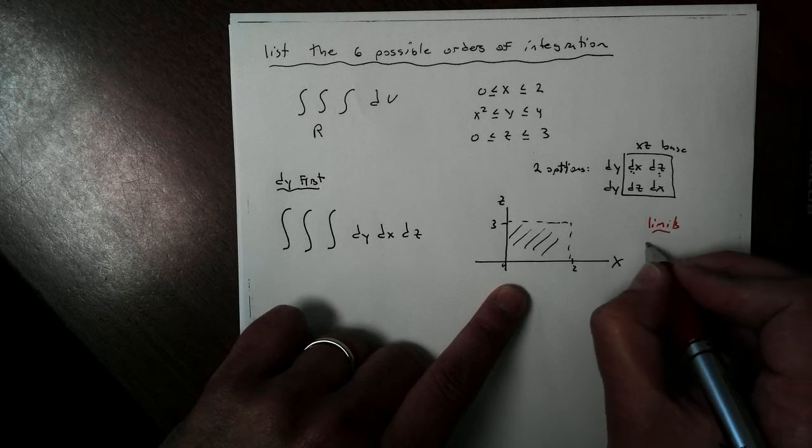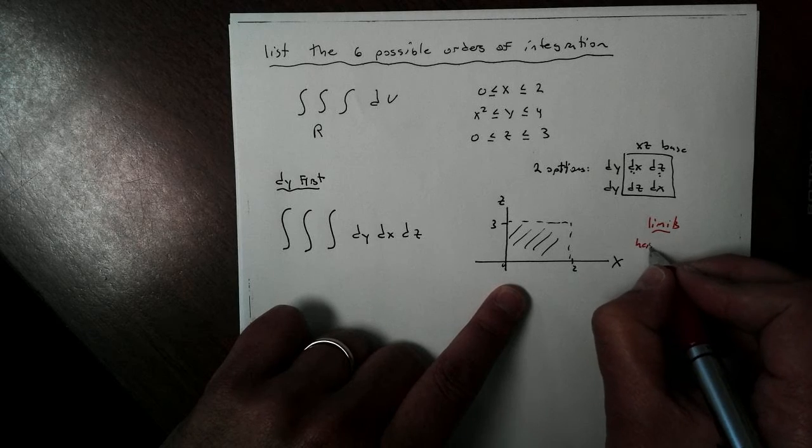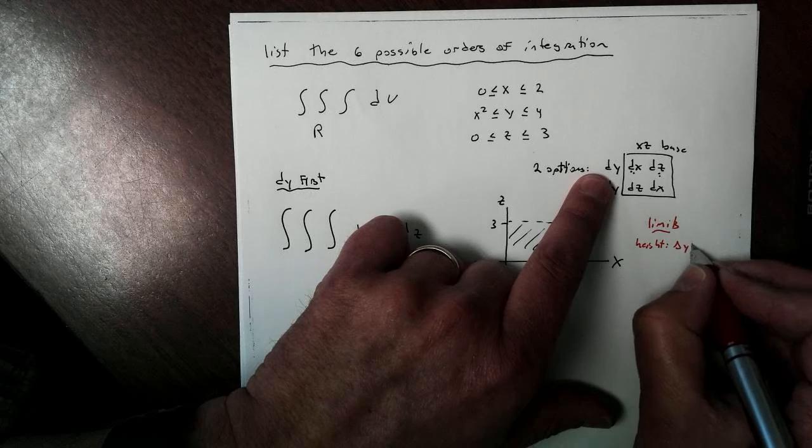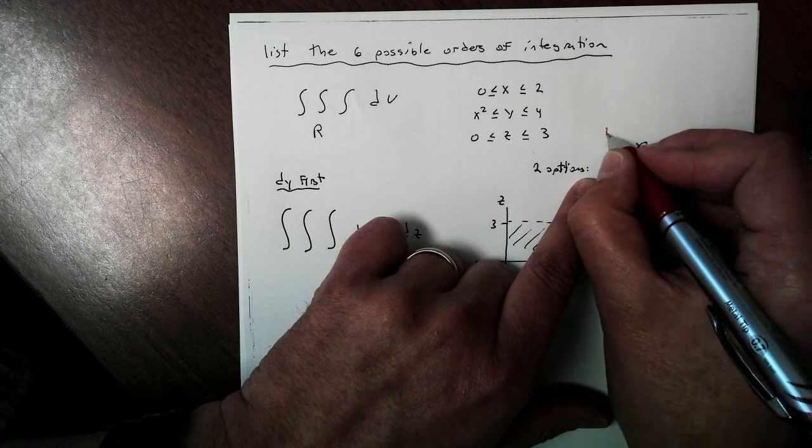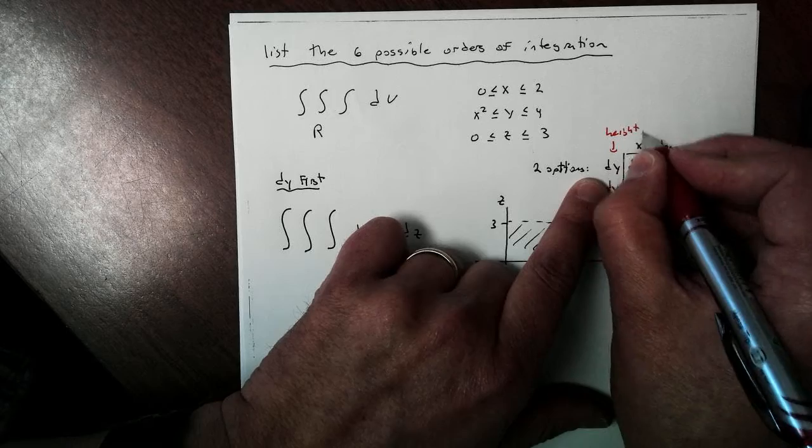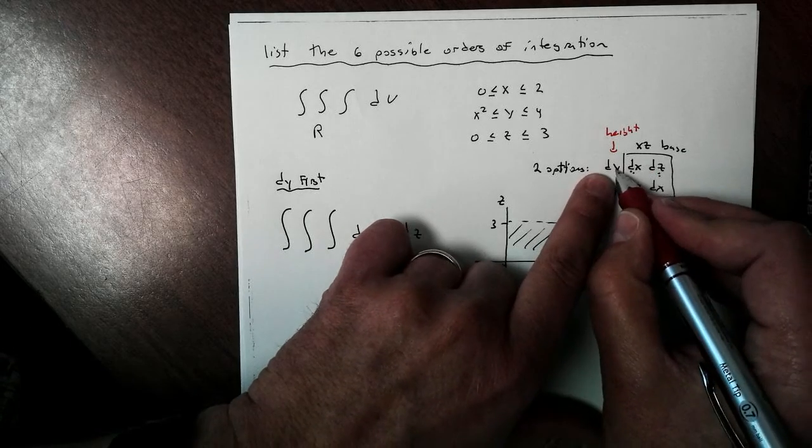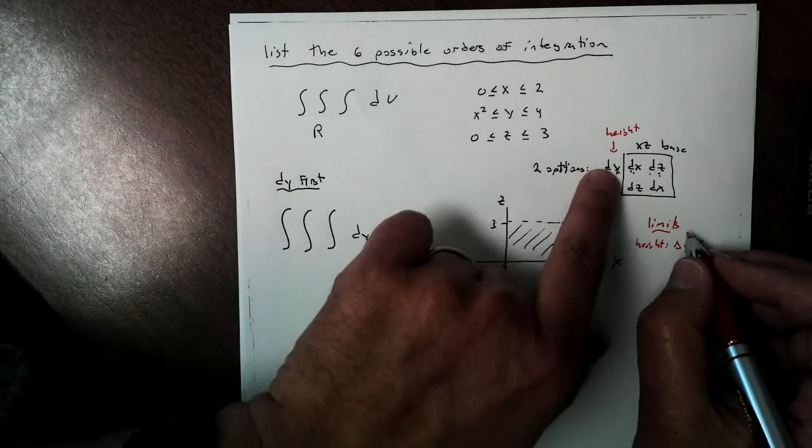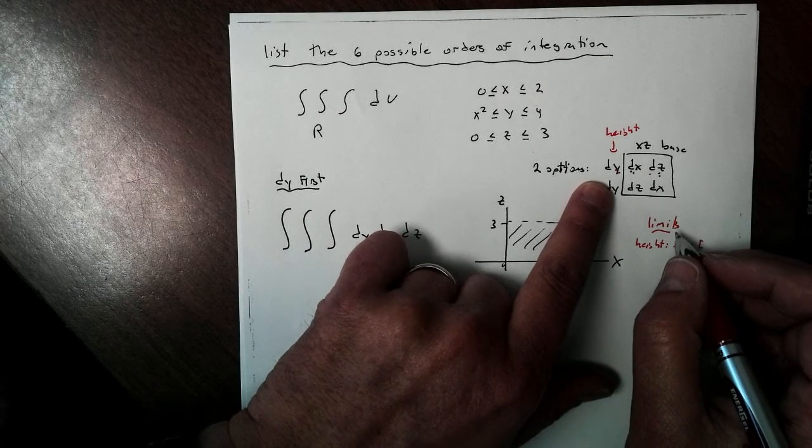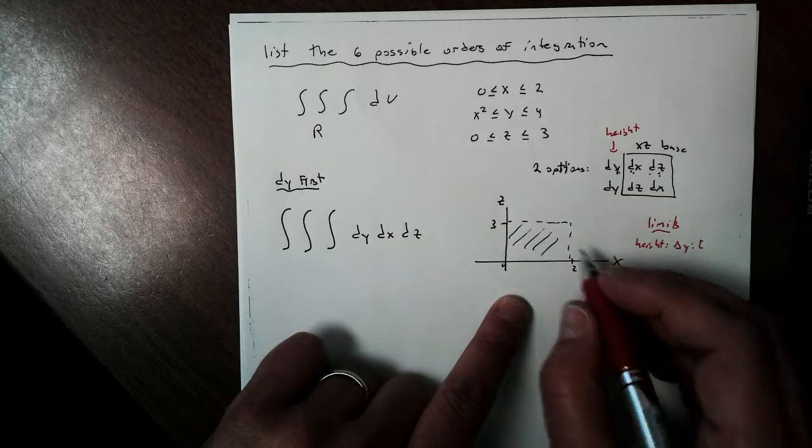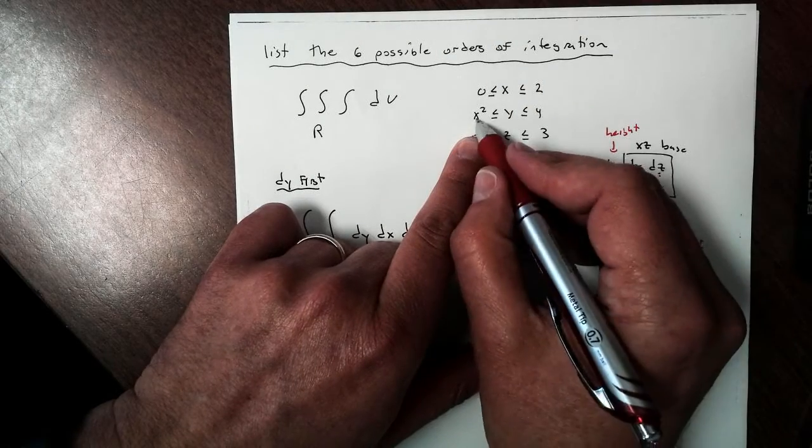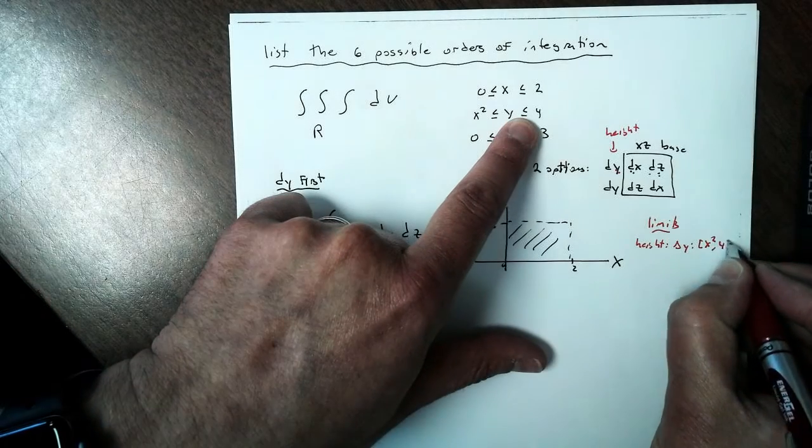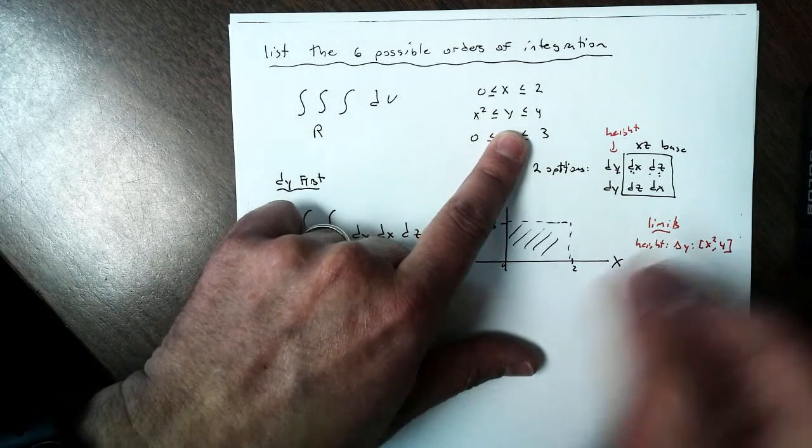This time, my height is my change in Y's, is delta Y. Because this is my height, right? And this forms my base. Area of the base times the height, that's how we get volume. So the Y's are my height this time. And for this one, our height start at X squared and go to 4. Very easy, I can just tell like that.